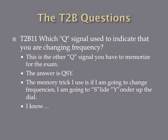Which Q signal is used to indicate that you are changing frequency? The answer is QSY. The memory trick is: the Q is a Q signal, and I'm going to S-slide Y-yonder up the dial. It's cheesy, but it's a memory trick. QSY is the Q signal used to indicate that you are changing frequencies.